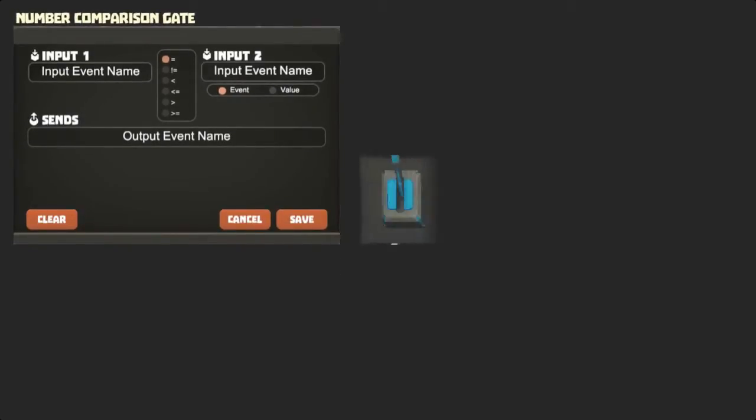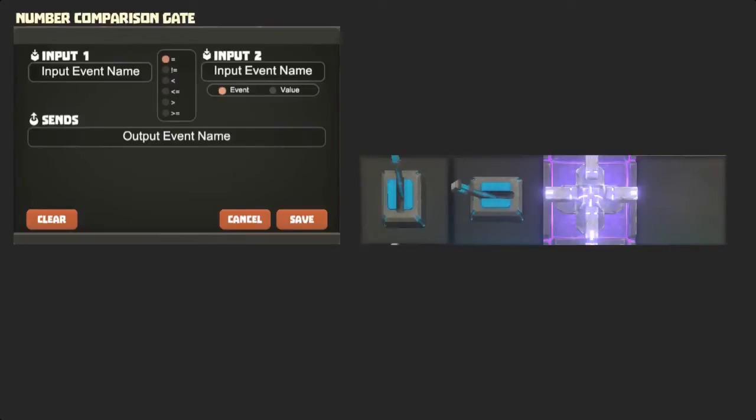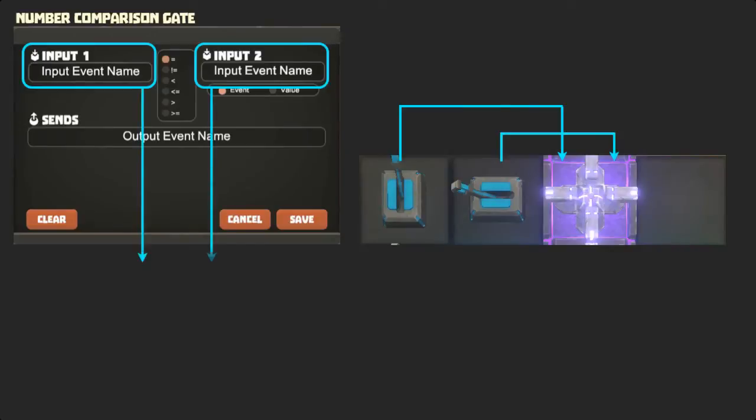We'll hook up our comparator to two switches and an LED. We'll connect our first switch to input 1, and our second switch to input 2. With two switches, each outputting either a true or false signal, we have four possible combinations.